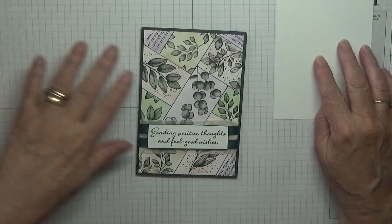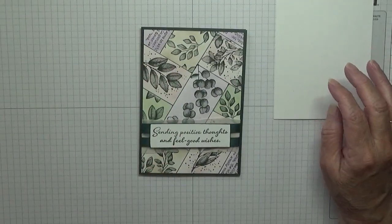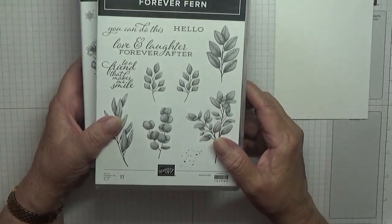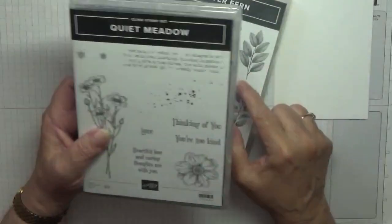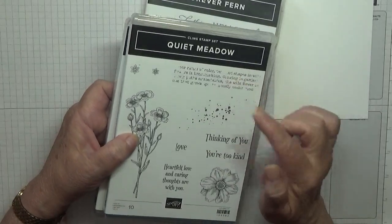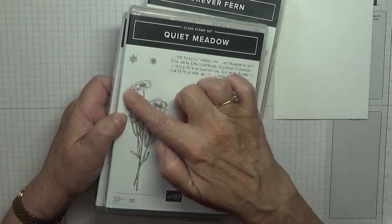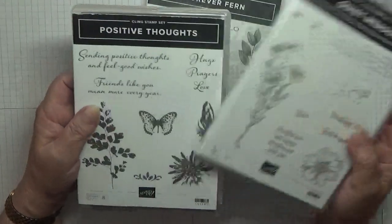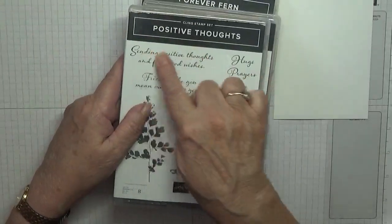Stamp sets: Forever Fern for the greens, Quiet Meadow for the script, the splatter, and I'm going to use these little flowers, and Positive Thoughts for the sentiment.